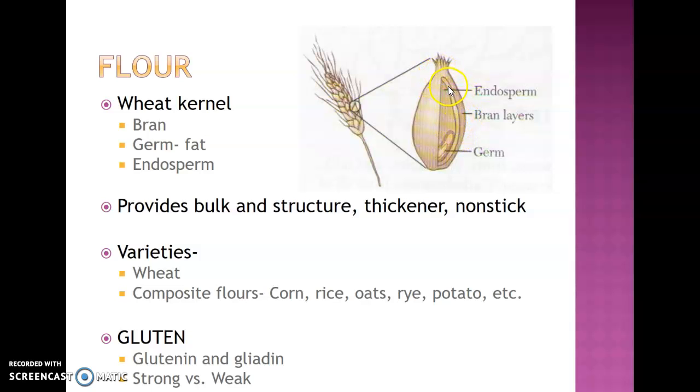Within, you'll find the bran, and then you'll find the endosperm, and then you'll have this little germ in here. The germ is where you'll find all of the fat, kind of like the egg yolk. The endosperm is where you'll find all the protein, kind of like the egg white. And this bran on the outside can be related to the shell of the egg.